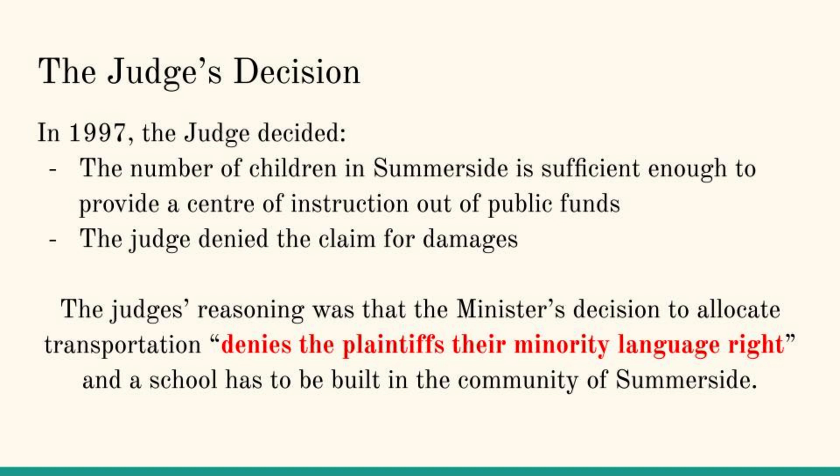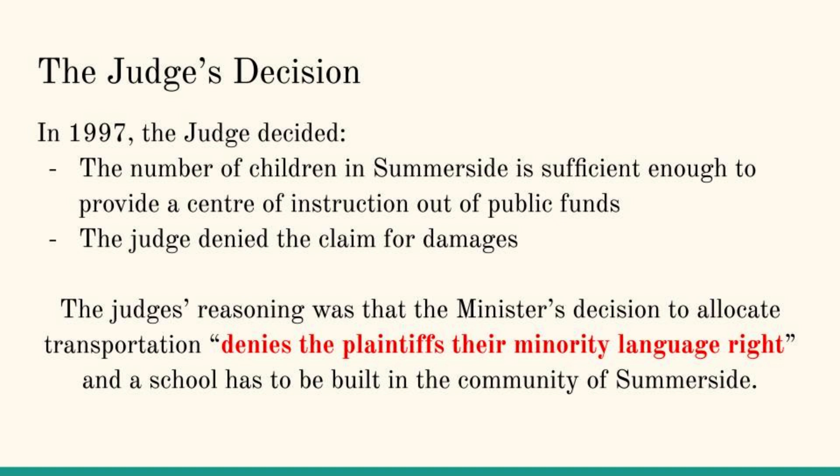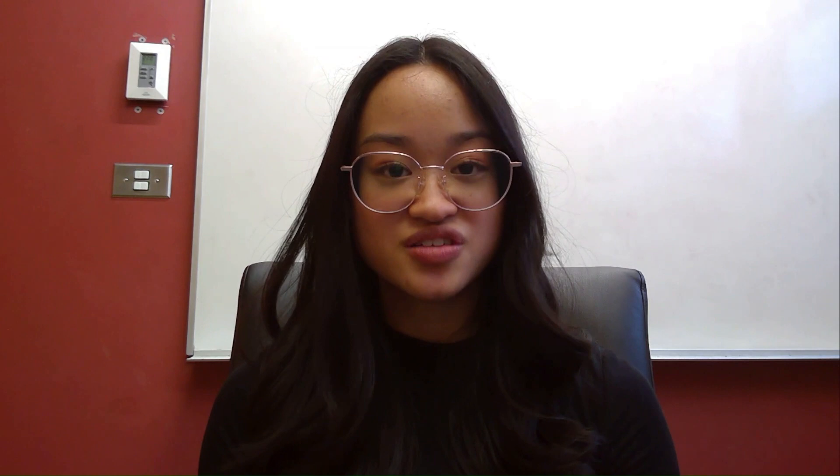In 1997, the judge decided the number of children in Summerside was sufficient to provide a center of instruction out of public funds. However, the judge denied the claim for damages. The judge's reasoning was that the minister's decision to allocate transportation denied the plaintiffs their minority rights, and since there were enough numbers to have a French school in Summerside, it was the responsibility of the French school board to determine what types of services are available to the registered French students of Summerside.